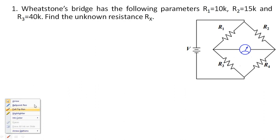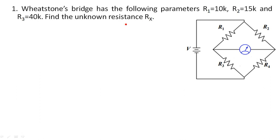Let us do this problem. A Wheatstone's bridge has the following parameters: R1 is equal to 10 kilo ohms, R2 is equal to 15 kilo ohms, R3 is equal to 40 kilo ohms, and R4 or Rx is the unknown resistance we need to calculate.